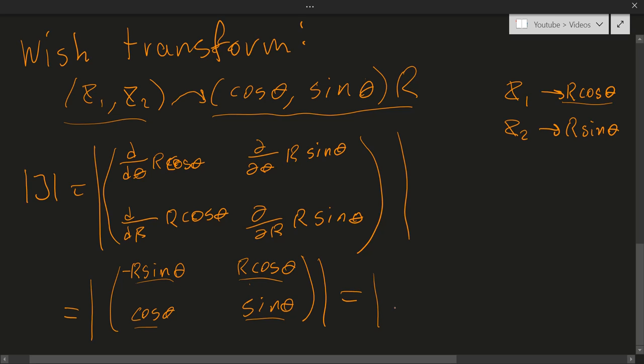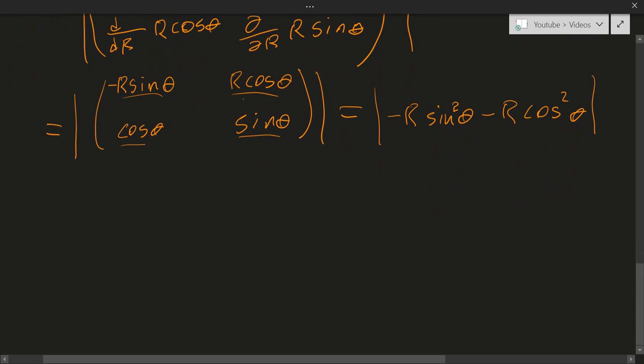So we take the absolute value of minus r sine theta squared minus r cosine squared theta. But if we take the absolute value of this and we put r outside, then we just get r multiplied by cosine theta squared plus sine squared theta. But it is a well-known result. I don't want to waste time showing it here. This is equal to 1, so the Jacobian is equal to r.